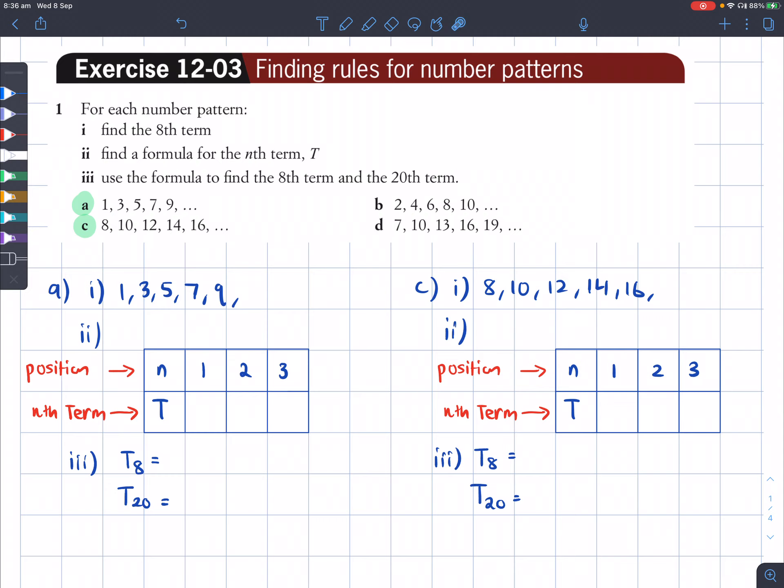Let's have a look at question 1a. For each number pattern: find the 8th term, find a formula for the nth term T, and then use the formula to find the 8th term and 20th term.